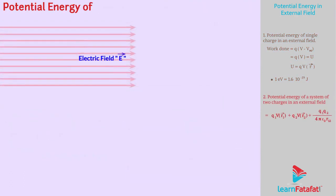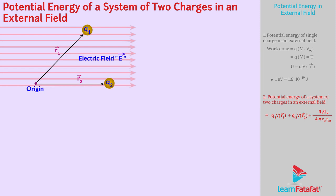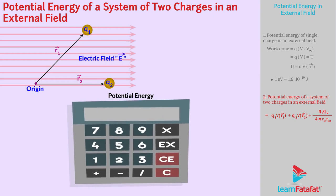Potential energy of a system of two charges in an external field. Two charges Q1 and Q2 are kept at R1 and R2 respectively. The potential energy of this system of charges can be calculated by finding the work done to bring these charges from infinity to respective positions.